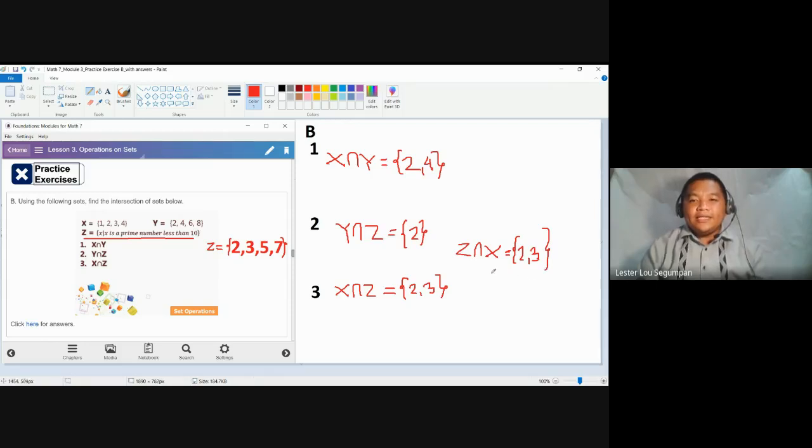The point is that, similar to union of sets, it doesn't matter which set comes first. If X comes first and then Z in the intersection, or if you interchange them to Z intersection X, they will still give the same result. The elements you need to list are those found in both sets. Similar to union of sets, it doesn't matter which set comes first.